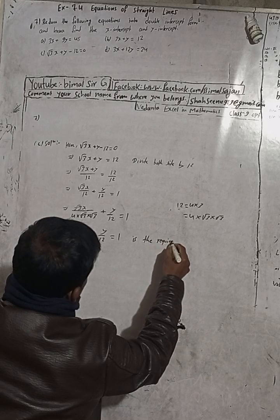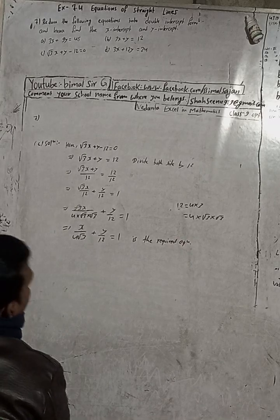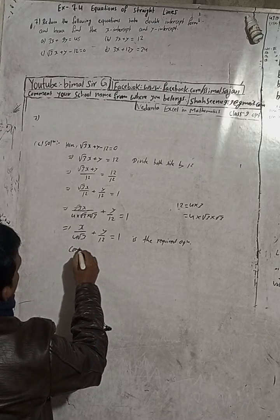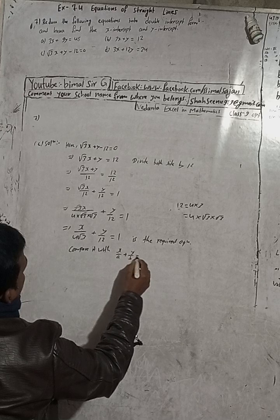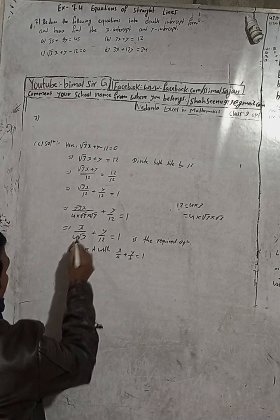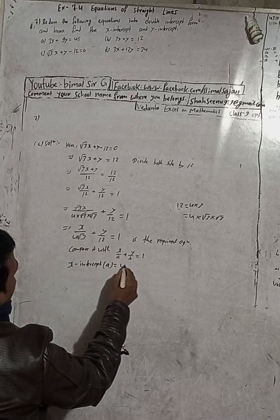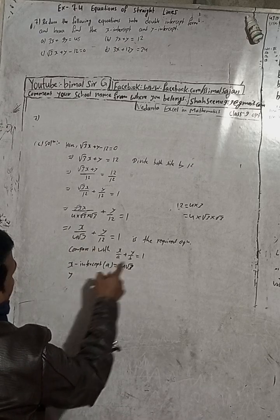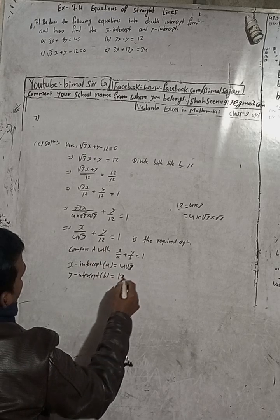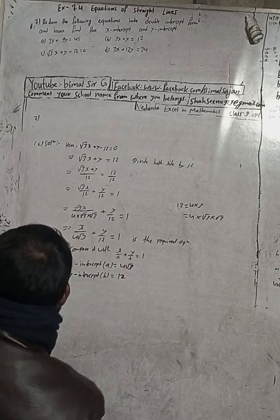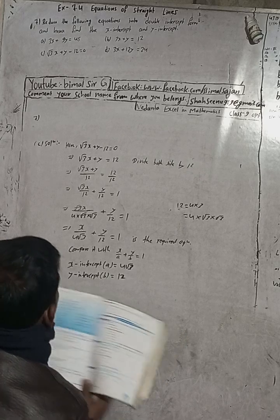This is the required equation in double intercept form. Comparing with x/a + y/b = 1, x-intercept a equals 4√3 and y-intercept b equals 12. Dividing further, y/12 simplifies to y/2 in some steps. The book answer is x by 4√3 plus y by 4 equals 1 — correct.